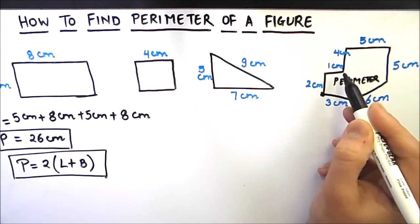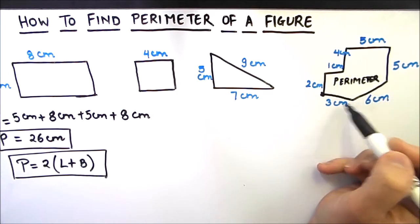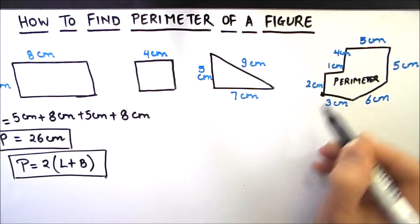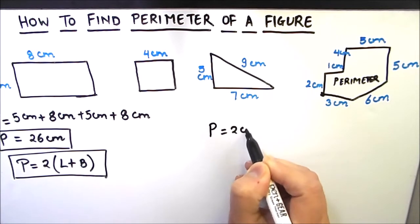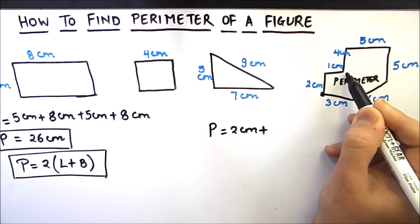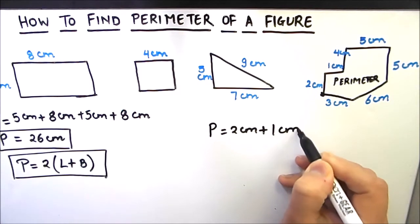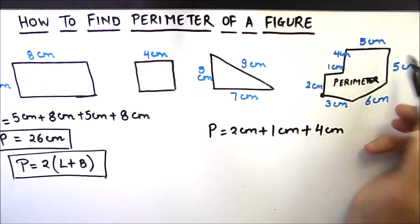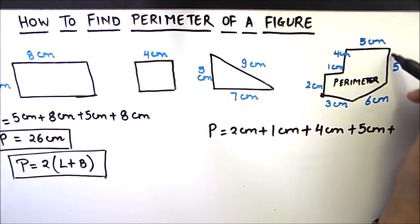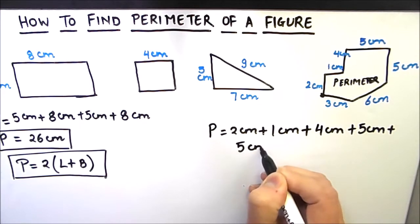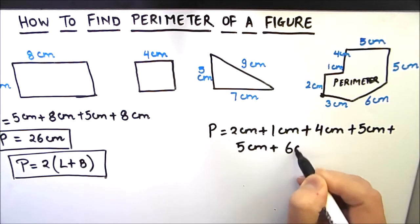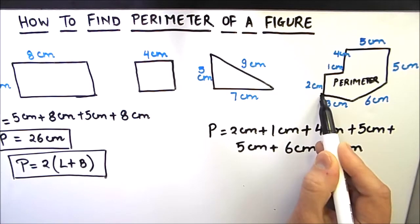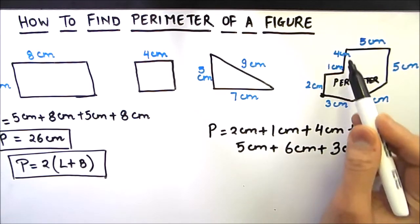For finding the perimeter of complex shapes, we should start with one side and go around the figure adding the sides one by one. Starting from one point: 2 centimeters, plus 1 centimeter, plus 1 centimeter, plus 4 centimeters, plus 5 centimeters, plus 5 centimeters, plus 6 centimeters, then 3 centimeters — coming back to the same starting point.